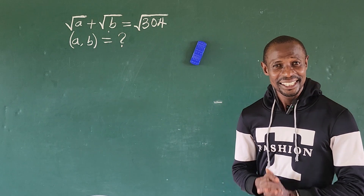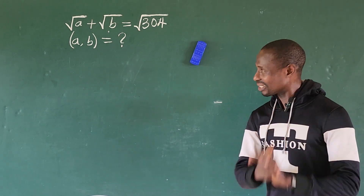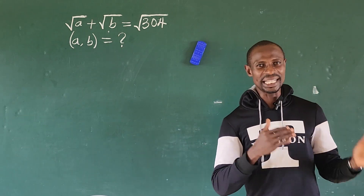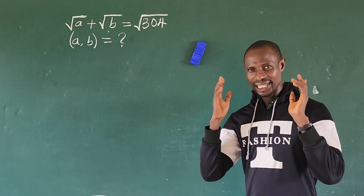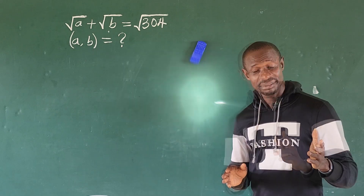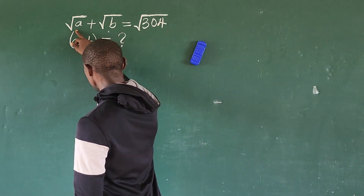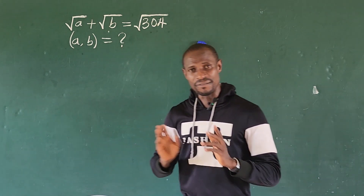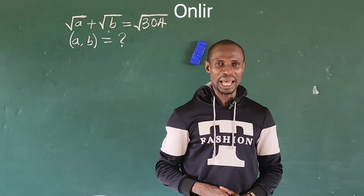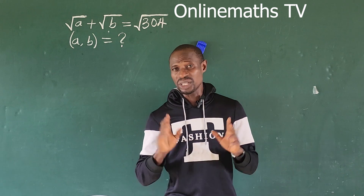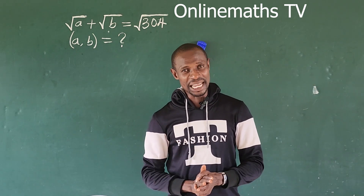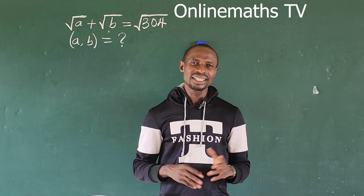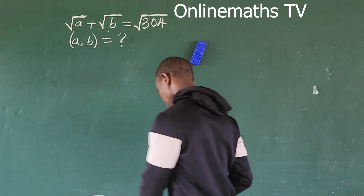Welcome to this challenge, welcome to this math class. The question before us is easy if and only if you know how to navigate your algebraic radical equation. The question is: the square root of a plus the square root of b equals the square root of 304 — what are the possible values for a and b? This is Online Math TV where we solve mathematics from different categories. Let's go into today's challenge without much waste of time.